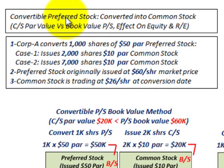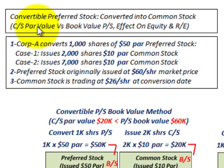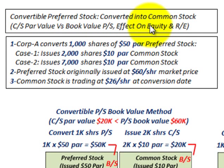Here we're going to be looking at convertible preferred stock where it's converted into common stock. We're going to be looking at our common stock's par value versus the book value of the preferred stock, and the effect that it has on the equity accounts — the stockholders' equity accounts — and also how it affects our retained earnings.